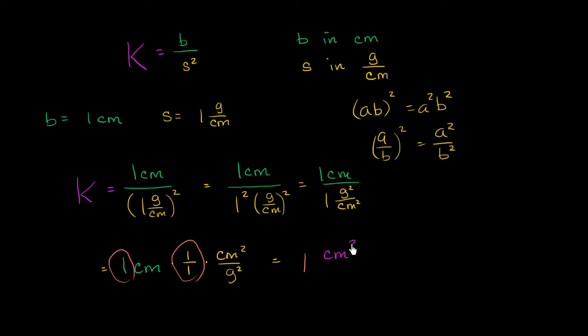Centimeters to the third power. And this isn't c times n to the third power. This is centimeters to the third power. You could write it like this if you wanted to be clear about it. Per, and over here, we still have grams squared.